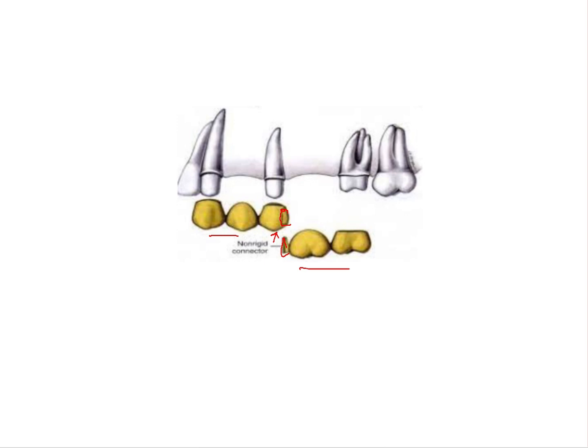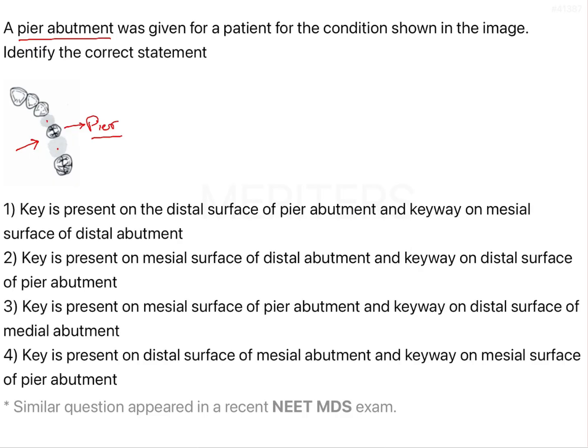In this question they have asked us the location. If you look at the options, they have asked about the placement of the key and the keyway. In the options they've given key is present on the distal surface of pier abutment or on the mesial surface of distal abutment.